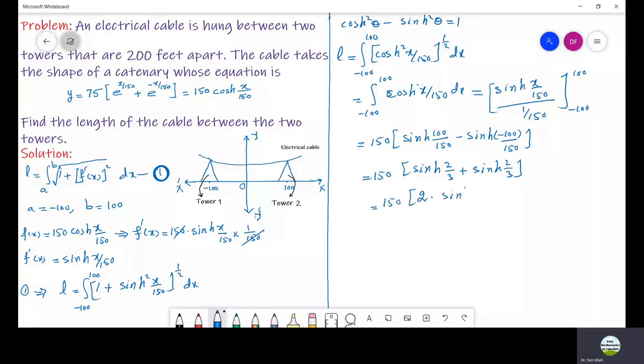Now from the calculator we can get the value of sinh(2/3) which equals 0.717.